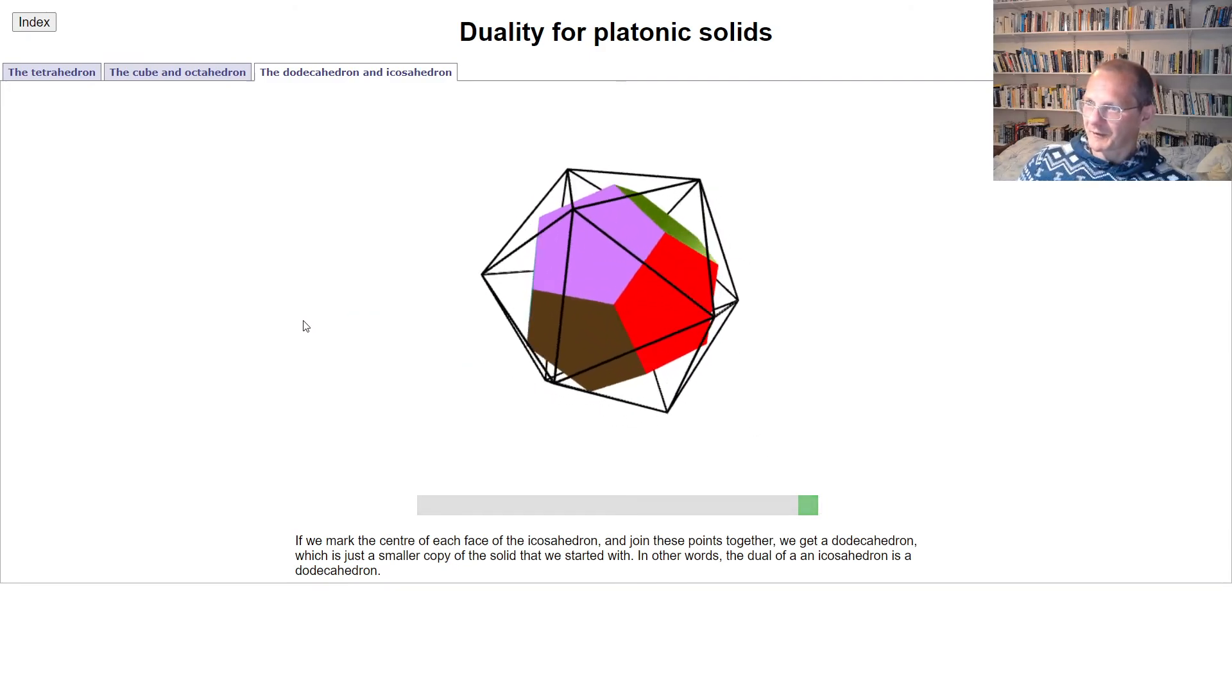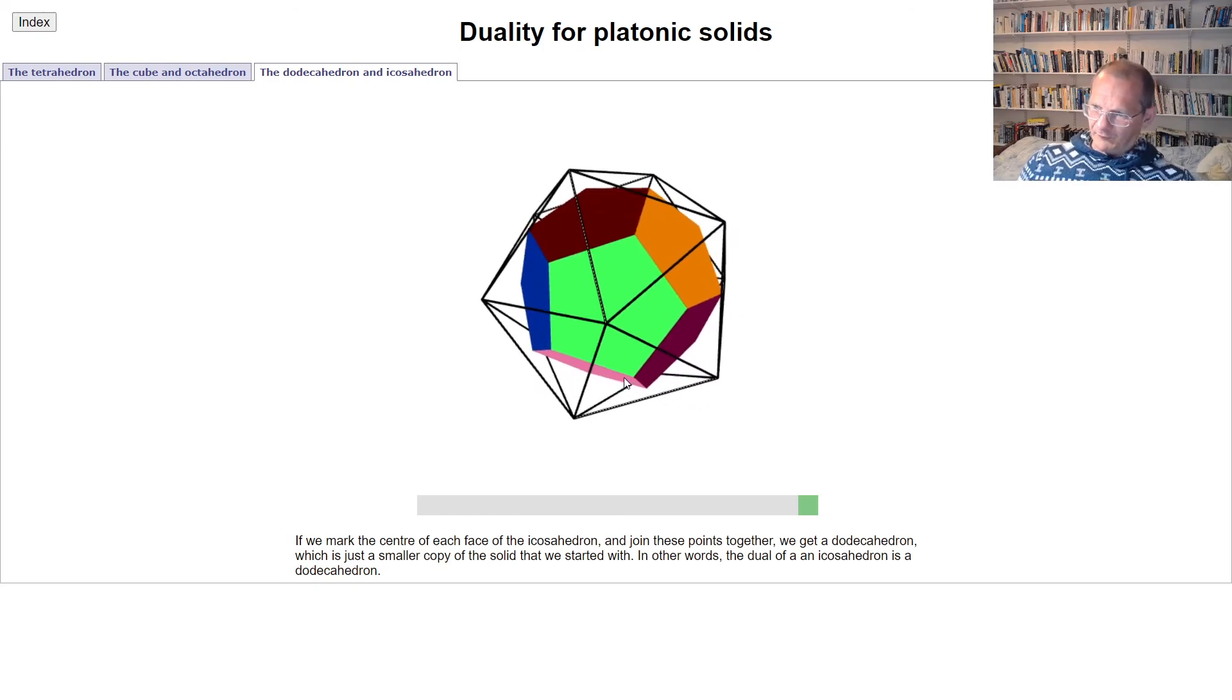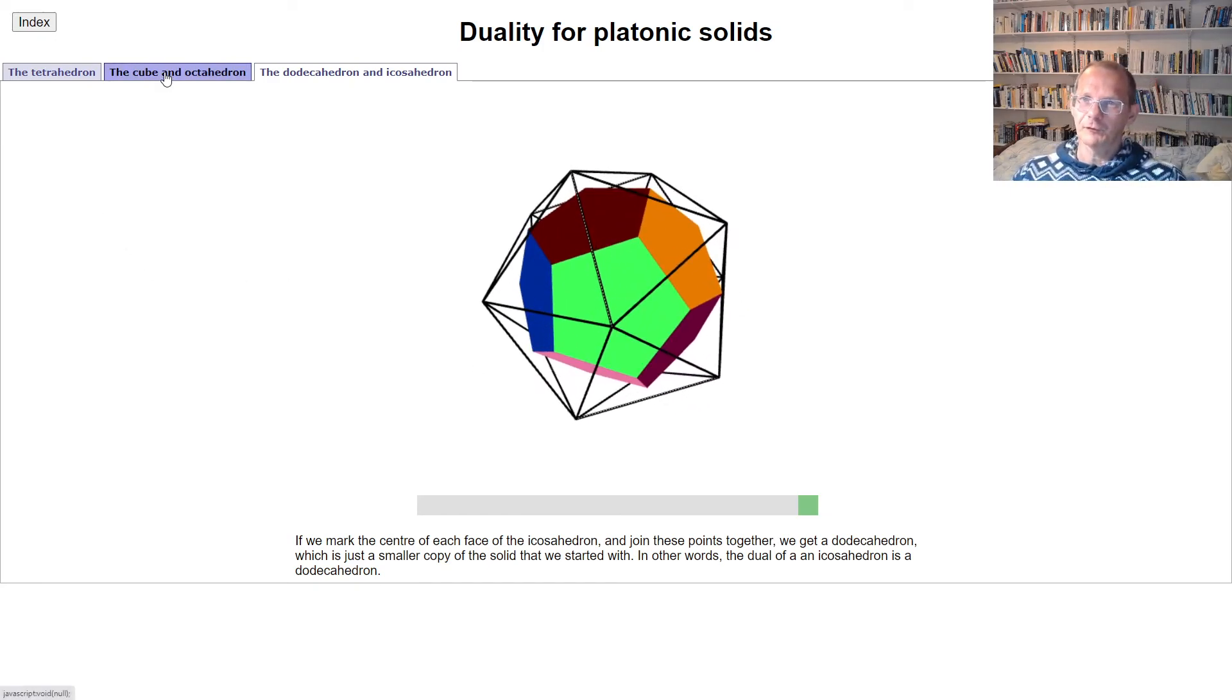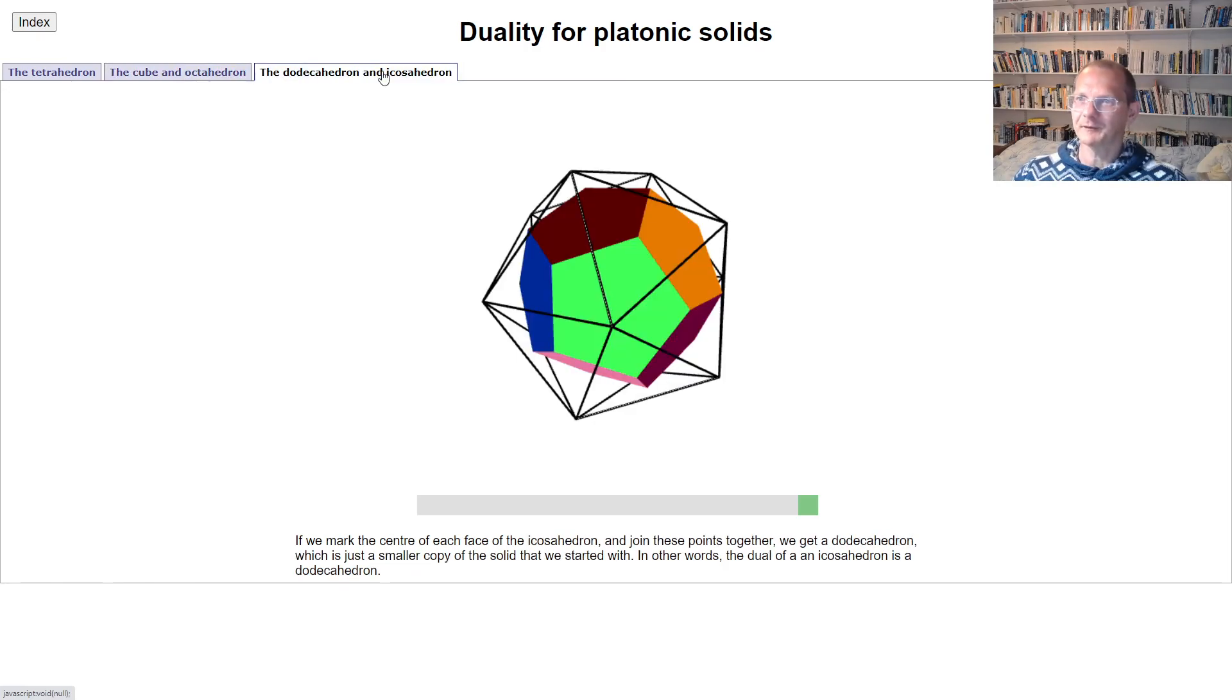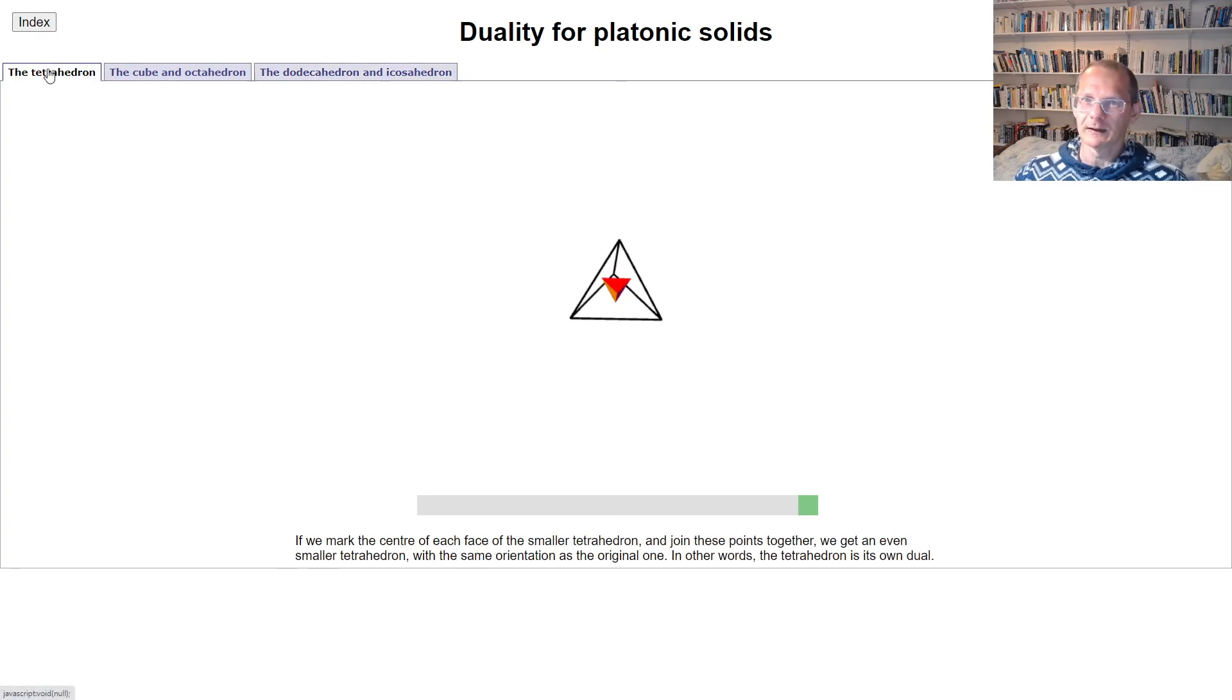So the icosahedron and the dodecahedron are dual to each other. So we've got our five different platonic solids. We've got two dual pairs. The cube and the octahedron are dual, dodecahedron and the icosahedron are dual, but then the tetrahedron is dual to itself.